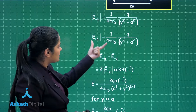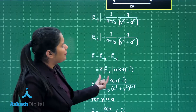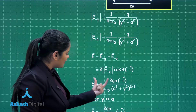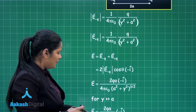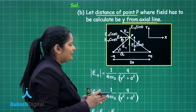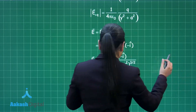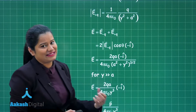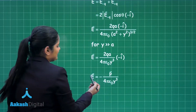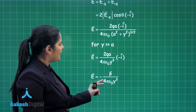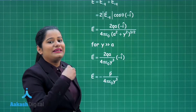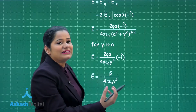Since the magnitude is the same for both, we write it as 2E₊q. We substitute the values of E and cosθ to get the full expression. Further, if we consider the dipole to be extremely short, then the length 2a is much less than the distance y of point P from the axial line, and the equation simplifies to E = −p / (4πε₀·y³).